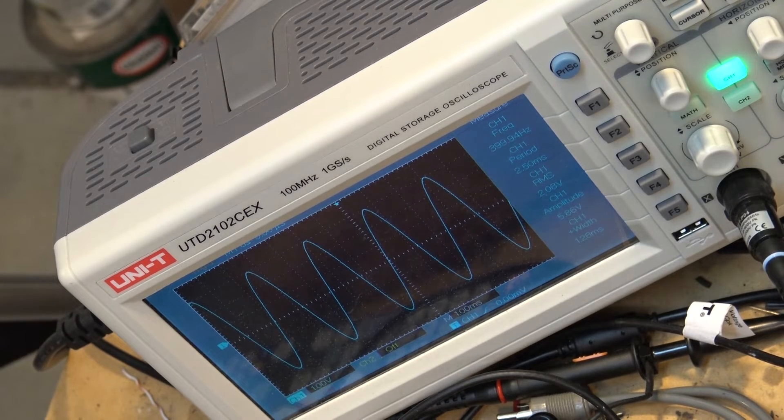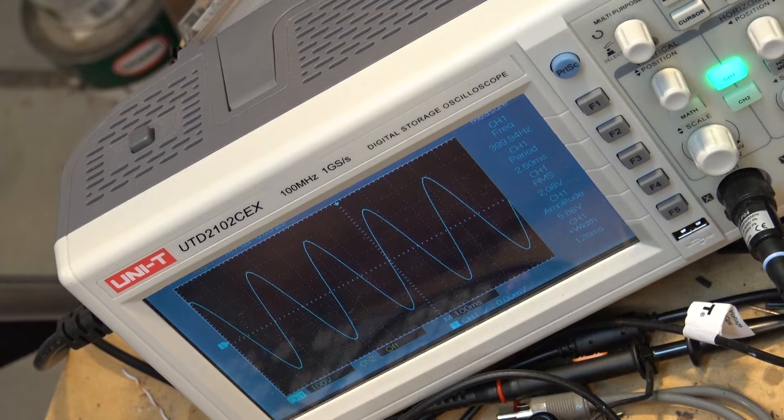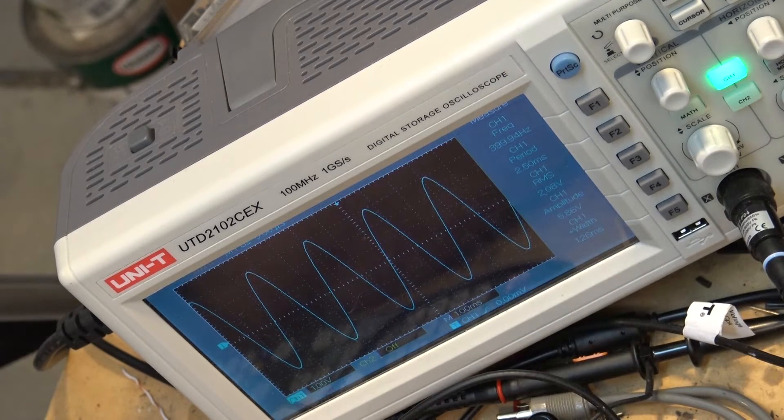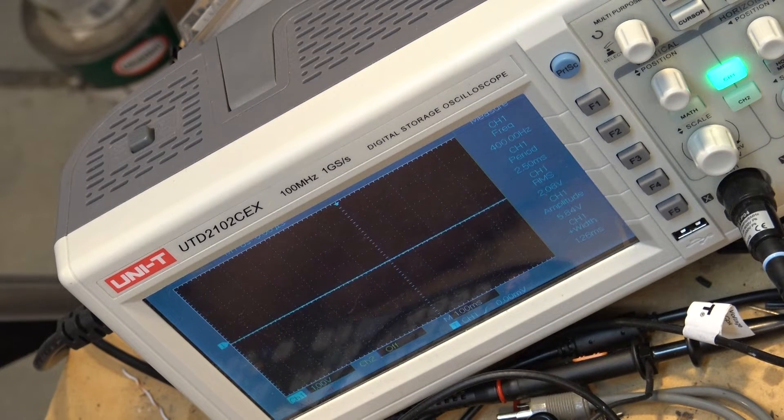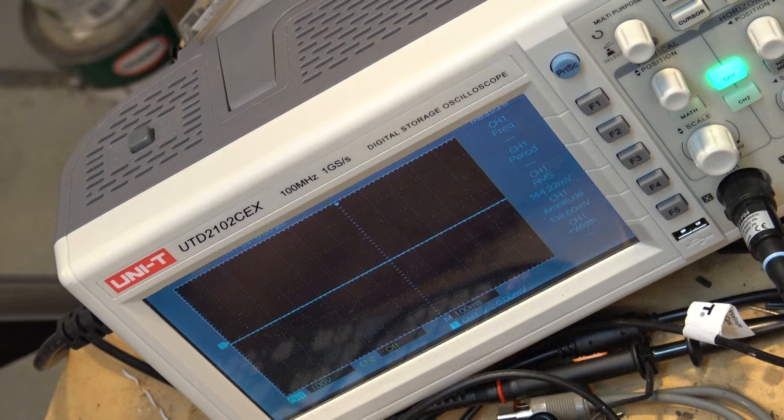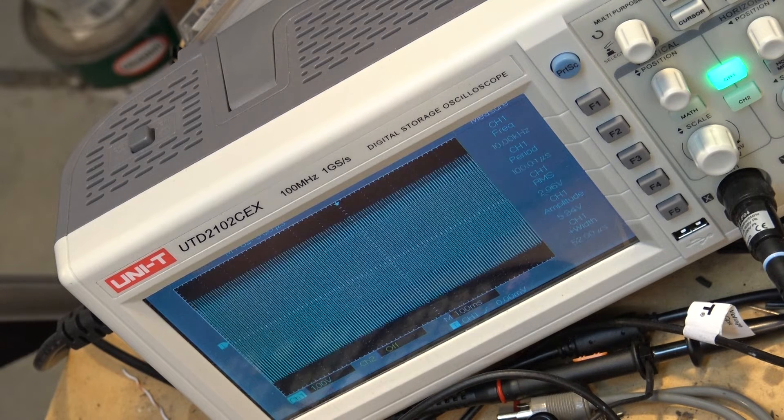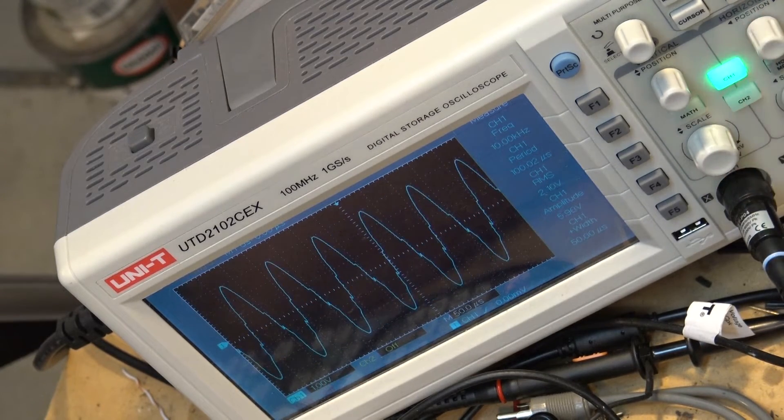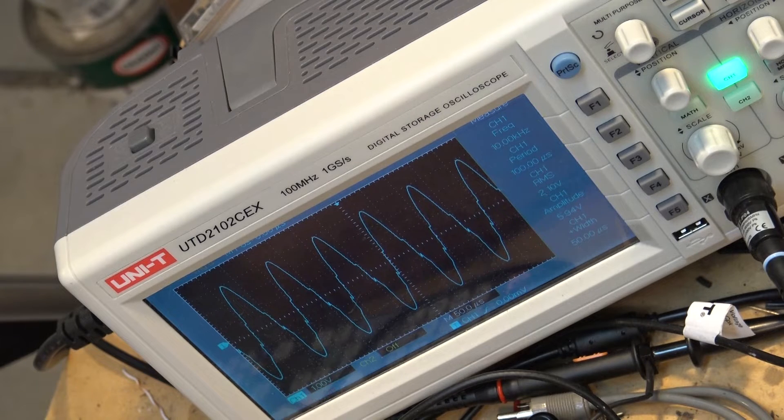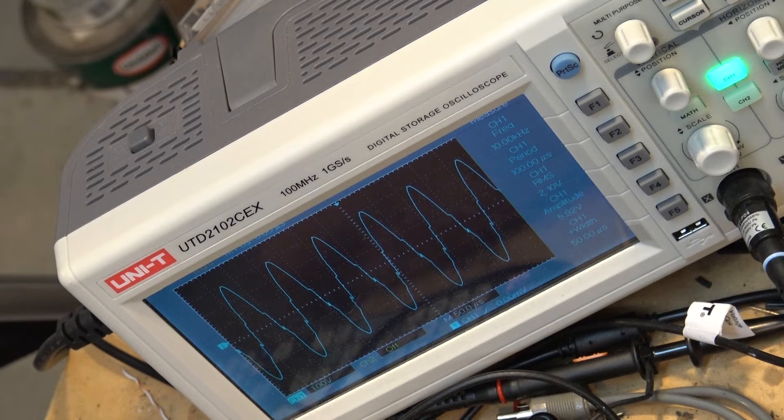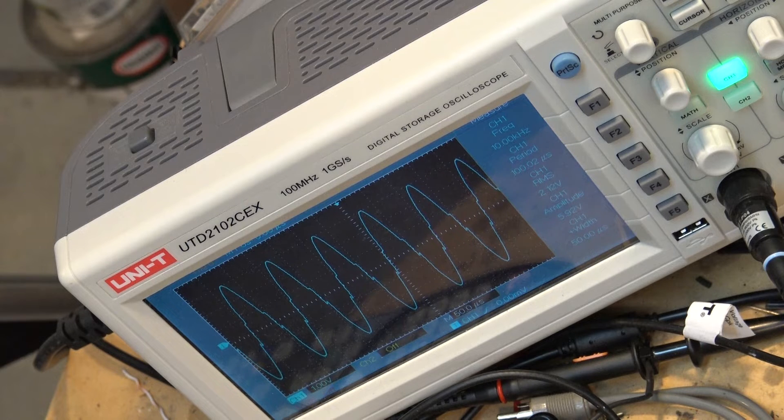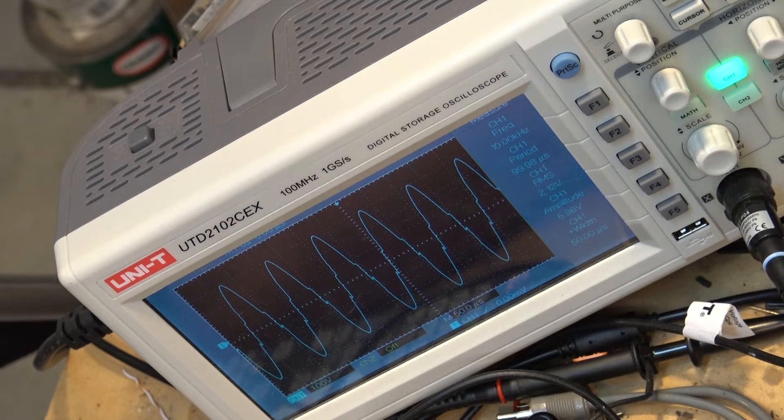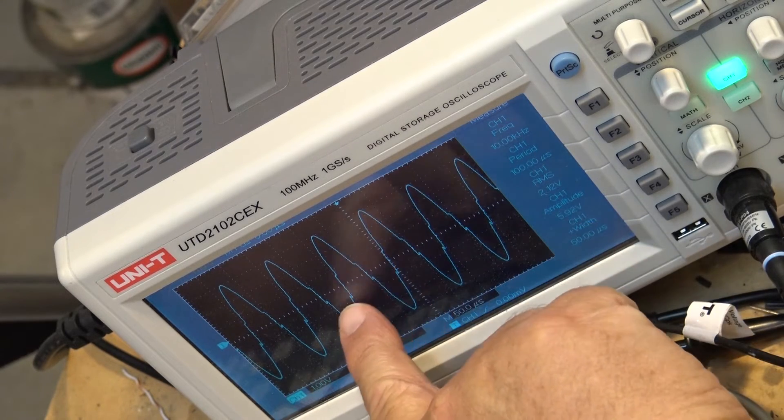So let's see how high this thing can go in terms of frequency. It sets 400 hertz and it's showing here at 399.94. Let's see how high we can take this thing up in terms of frequency. So let's try 10 kilohertz. Yeah, it has a 10 kilohertz and 100 kilohertz. So there's 10 kilohertz and it's not looking quite as nice.